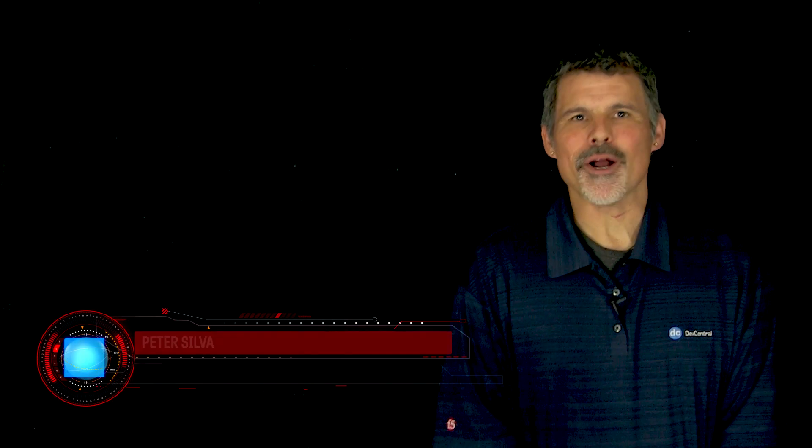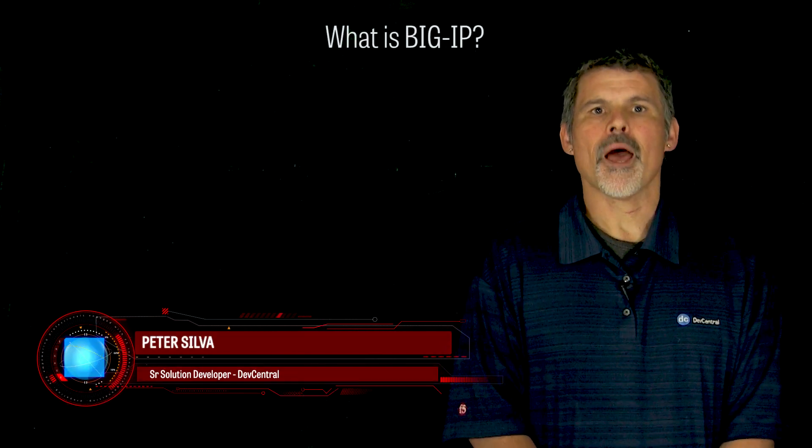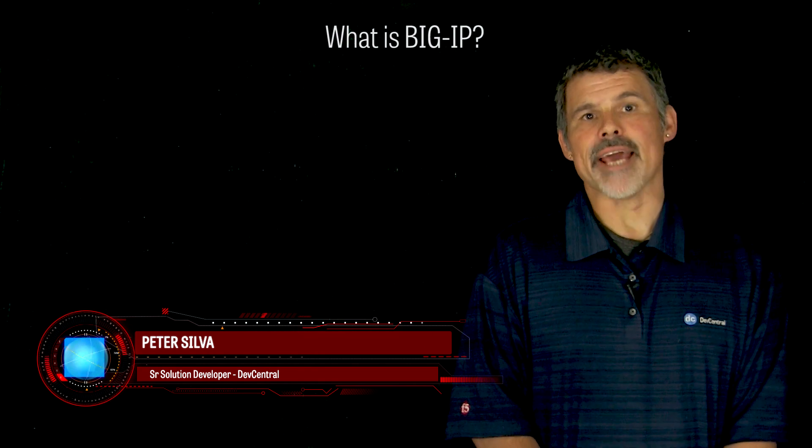I'm Peter, and welcome to another edition of F5 DevCentral's Lightboard Lessons. Back in the early days of F5, Big IP was our original load balancer. This whole idea of presenting a virtual IP address on behalf of the many devices behind it made it seem like this IP address was much bigger than a normal IP.